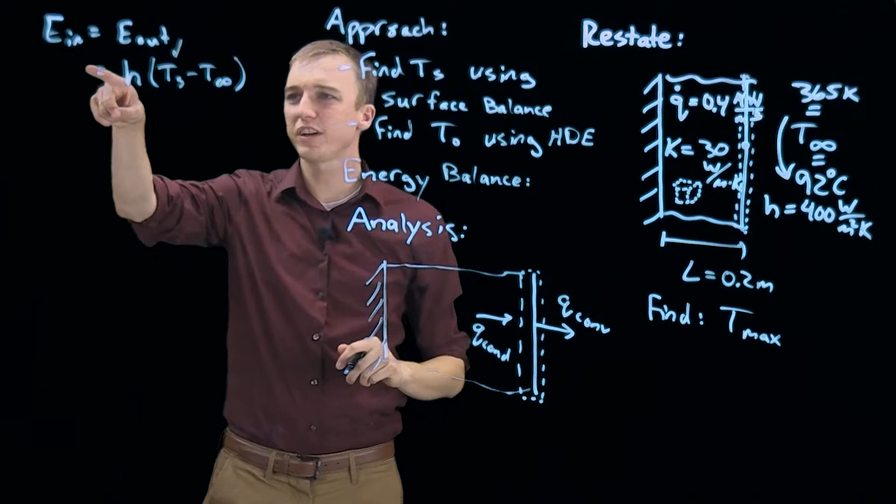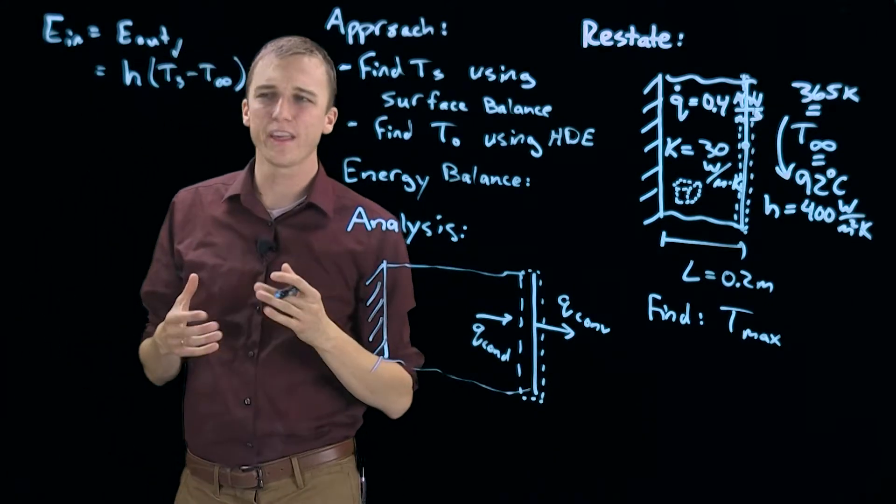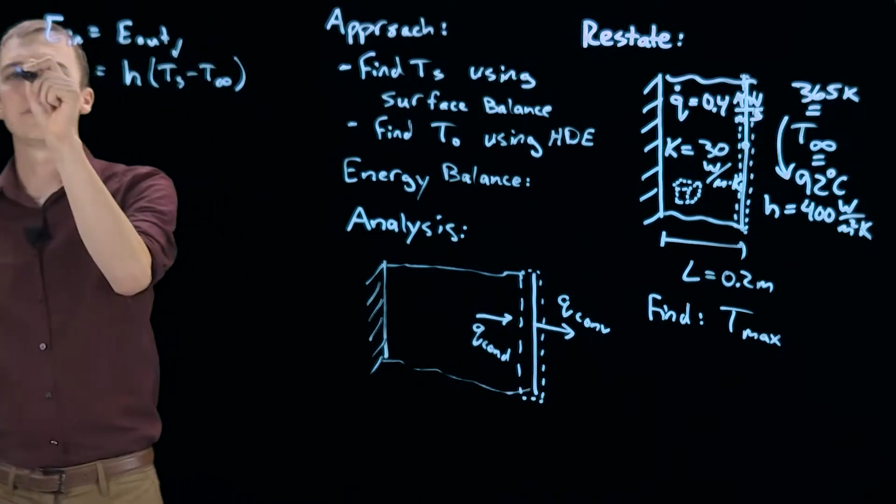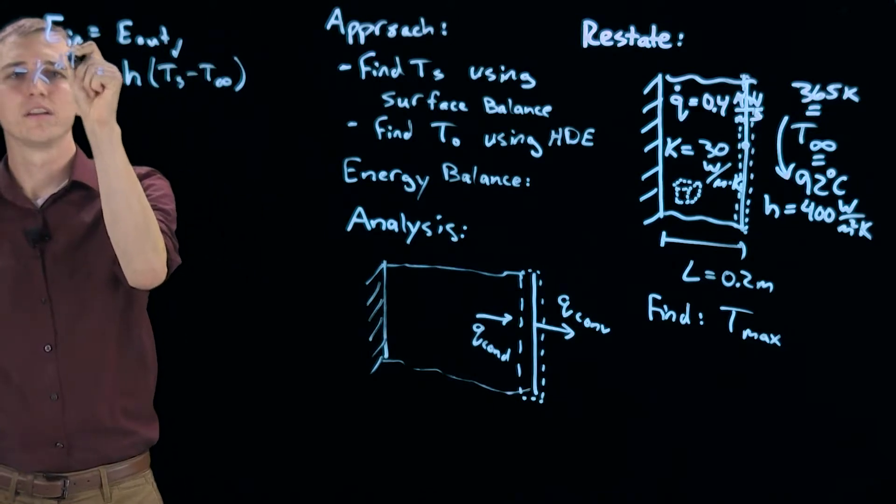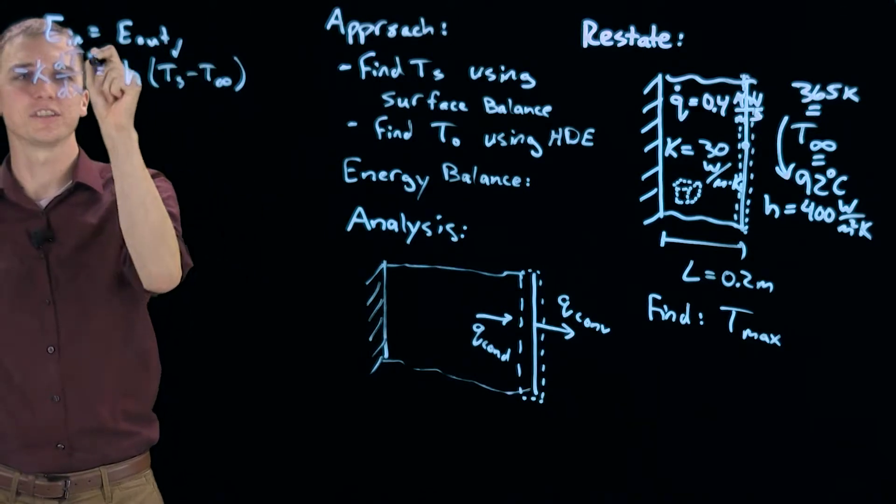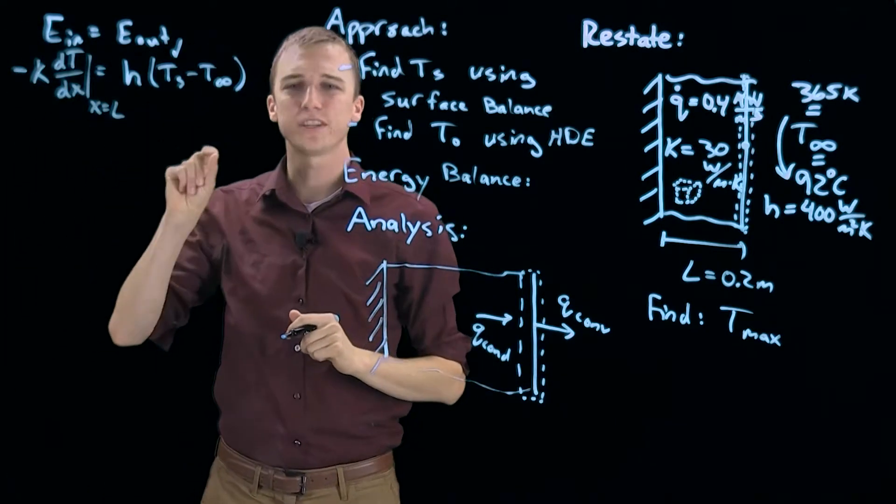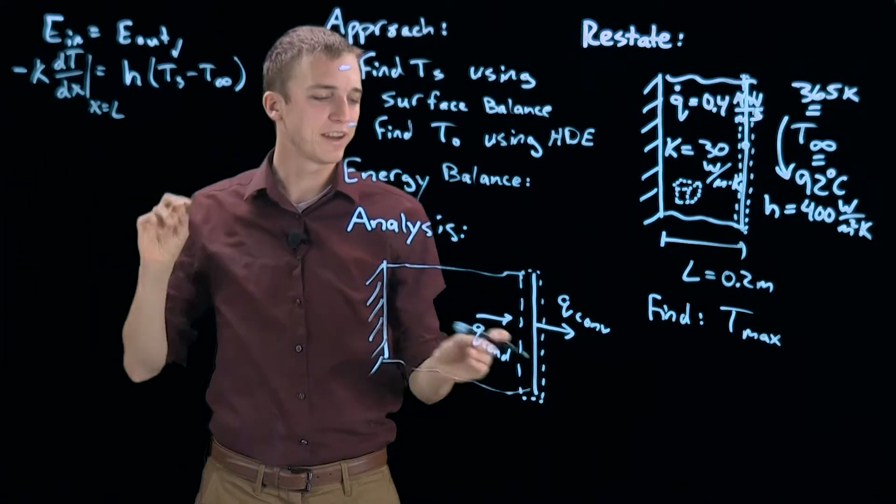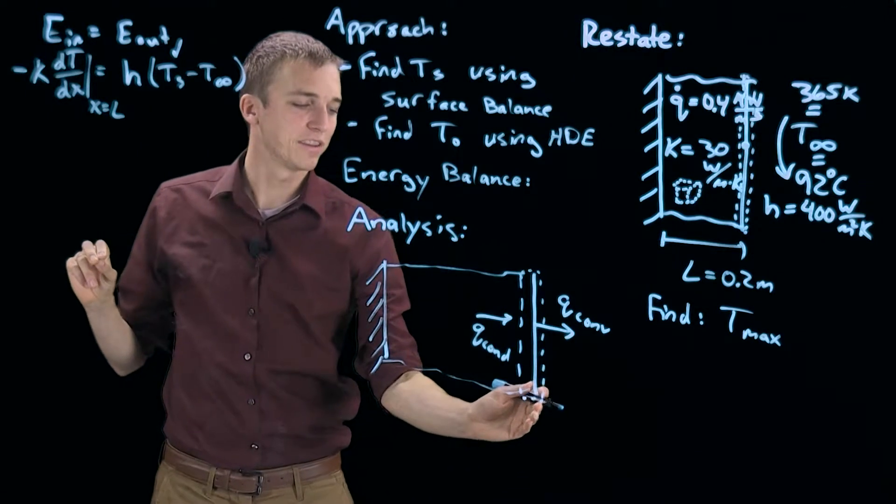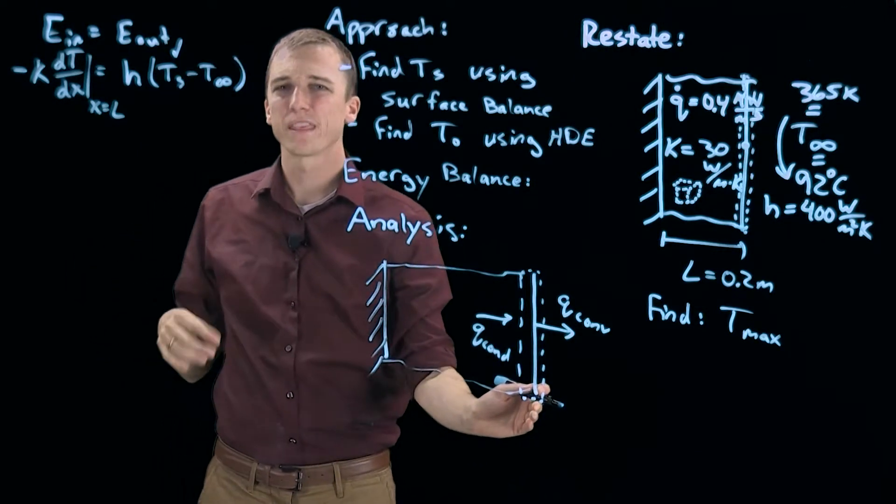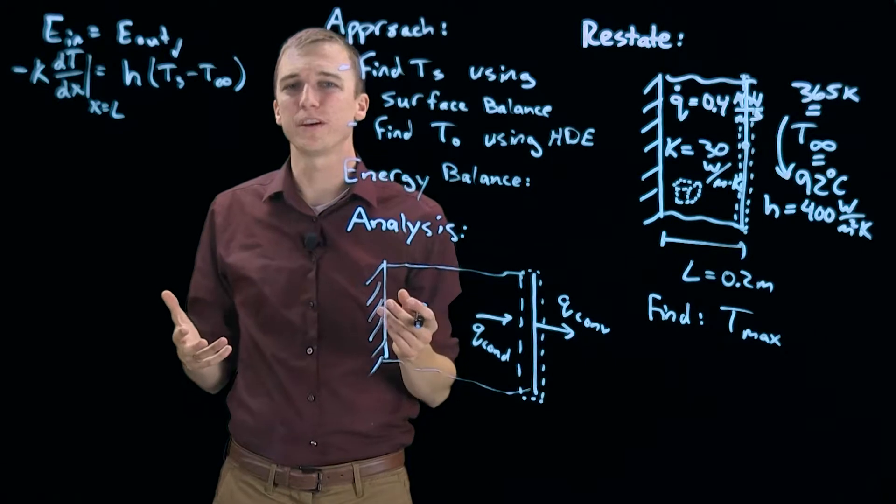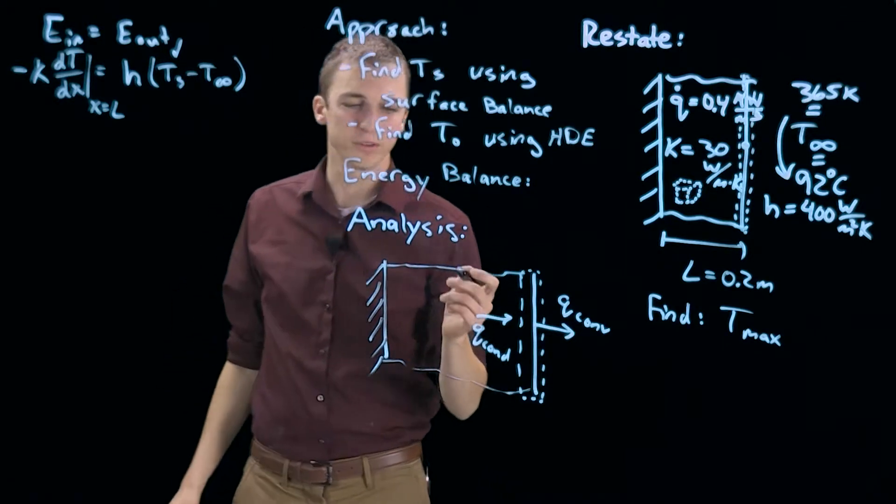Now here is the tricky one. E in or Q conduction, how are we going to model that? Normally we use Fourier's law of heat conduction, which would be the derivative of our temperature profile evaluated at an X of L, or at this point in the wall. Our problem is we don't know the temperature profile yet, but there is a different approach we can take.